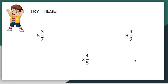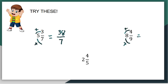Let's practice some more. Five and three sevenths — change this into an improper fraction. Seven times five is thirty-five; thirty-five plus three will give us thirty-eight over seven. Moving on: nine times eight is seventy-two; seventy-two plus four is seventy-six over nine. And the last one: five times two is ten; ten plus four will give us fourteen over five.